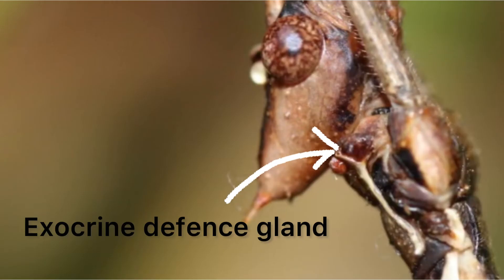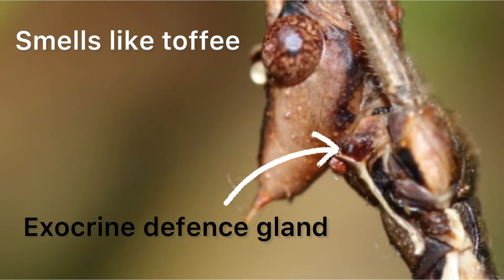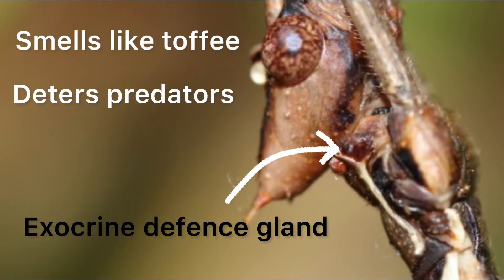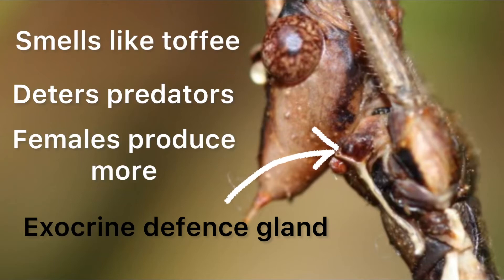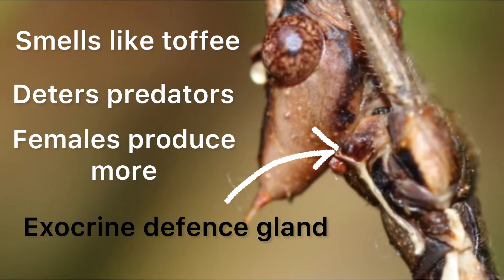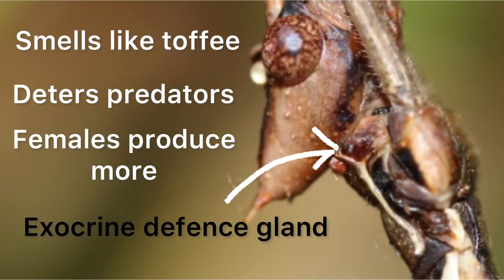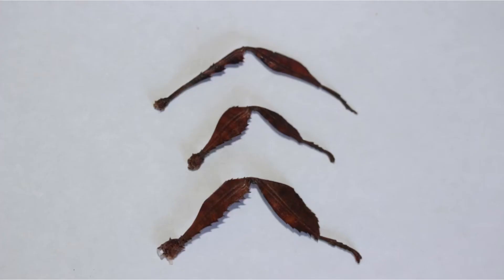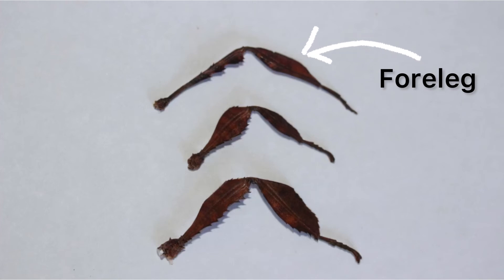On each side of the prothorax is a small exocrine defense gland. This gland produces a toffee-smelling pheromone which is used to deter predators. Female insects are able to produce a lot more of this pheromone compared to males. This is because males have the ability to fly away from a threat, whereas females cannot, so females have to rely more on this pheromone to keep them safe. The prothorax also includes the forelegs, which are the second longest legs of the three pairs and have the smallest lobes.